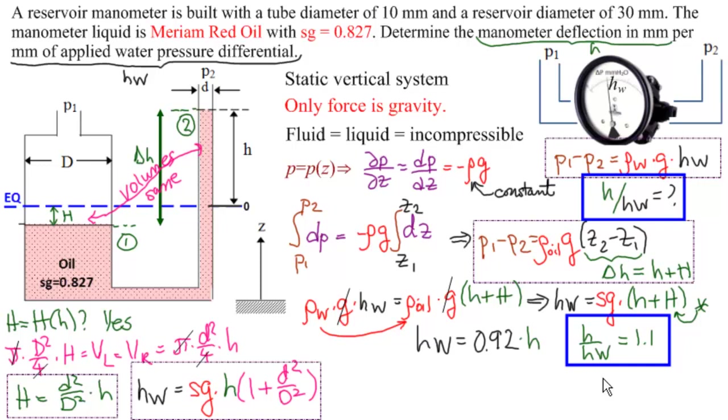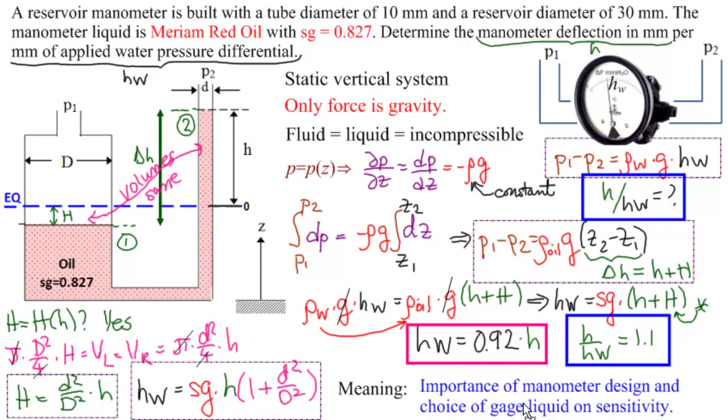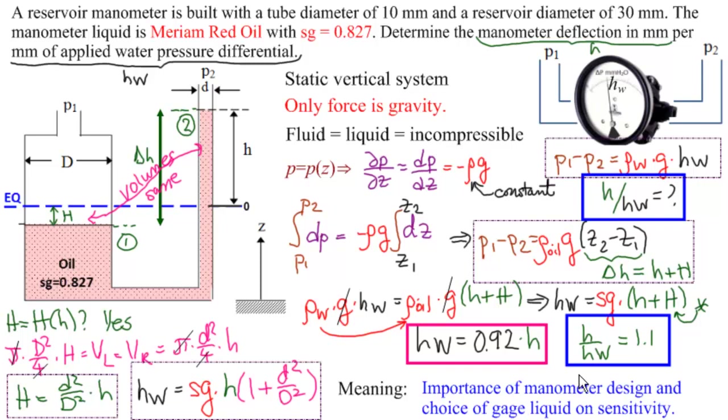Part 4 is to interpret these results, that is to find the meaning of what we have. This is considered to be the sensitivity. h over hw is the sensitivity. So this is a more sensitive manometer than say something that had a lower value than 1.1. Another thing we could think about is how, given h, we would find hw using this formula. We should remember that we used big D and little d as 30 to 10. Everything that we've done shows the importance of manometer design and the choice of the gauge liquid on this sensitivity.